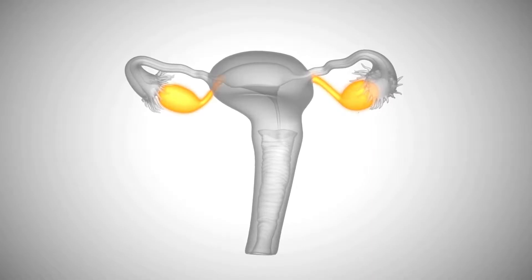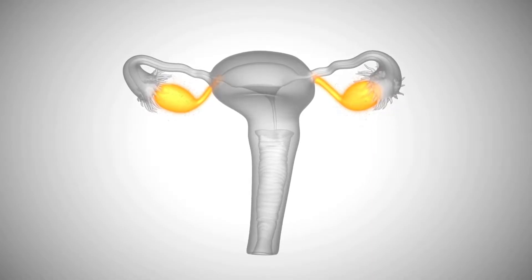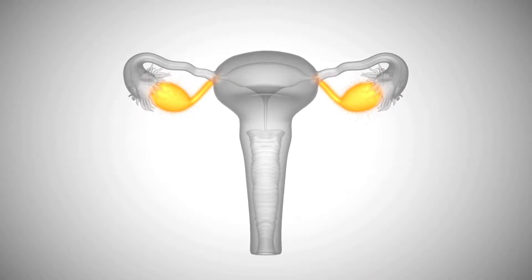Antimullerian hormone or AMH is a hormone that is produced by ovarian follicles and it is often used as a marker of ovarian reserve. In this video we will discuss details about the ovarian reserve and the AMH, including how it is measured, what are the factors that can lower it, how to improve it if there is any possibility, and also the impact of AMH on fertility rates and ART treatment.